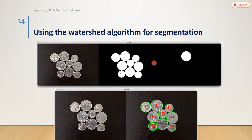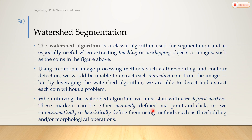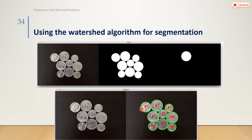This is the example and theory concept of the watershed algorithm. When we utilize the watershed algorithm, we must start with user-defined markers, which can be given manually or automatically. This covers the basic concept of watershed algorithm for segmentation. In the next video we will discuss graph-based segmentation. In this entire chapter we discuss segmentation concepts. Thank you.